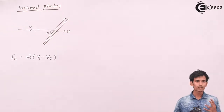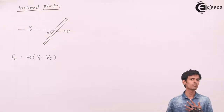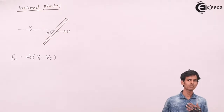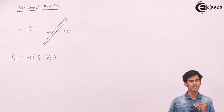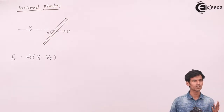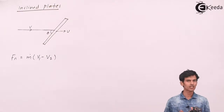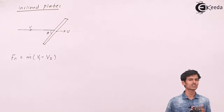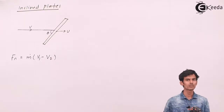To calculate the normal component of force, the velocity also has to be the normal component of velocity — that is, the normal component entering and the normal component leaving the plate. Since the velocity leaving the plate is along the plate, there is no component normal to it, so V2 is 0 here as well.